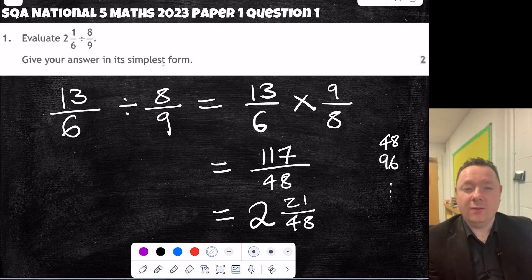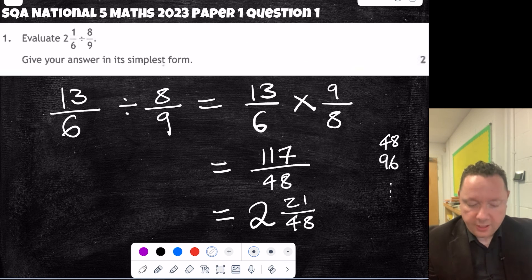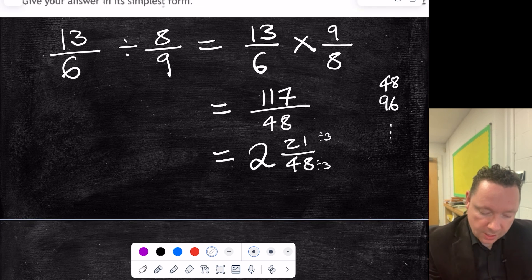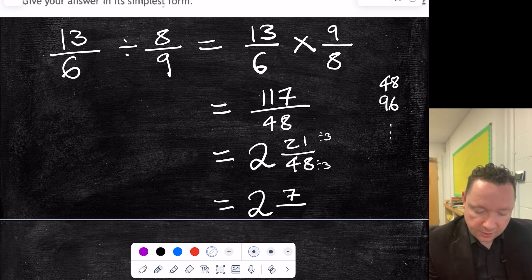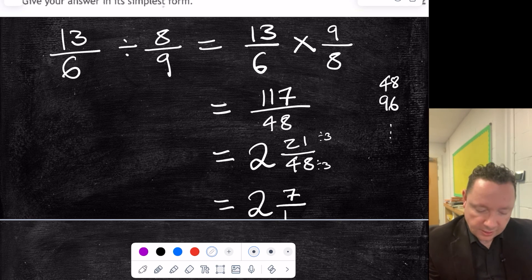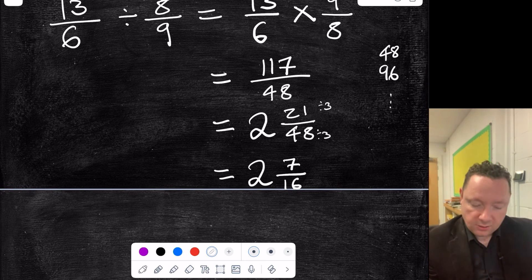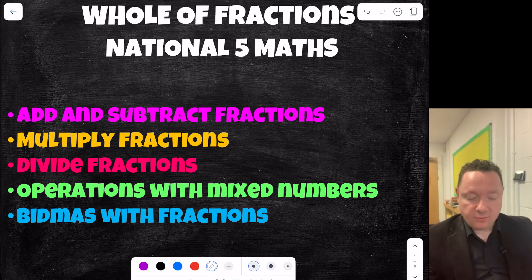And now I'm going to do this check, is 21 over 48 something I can simplify. Well, 21, 3 goes into, and 48, 3 goes into, so I can divide by 3 on the top and bottom. I'll just take a note of that next to the fraction, so you can see that. So that gives me 2, 3 sevens is 21, and 3 into 48, well, 3 into 4 goes 1, with 1 left over. 3 sixes is 18, I get 7 over 16. Well, 7 is a prime number, it doesn't go into 16, so there's my final answer, 2 and 7 sixteenths.